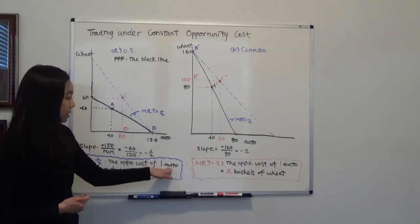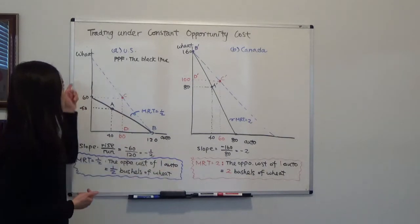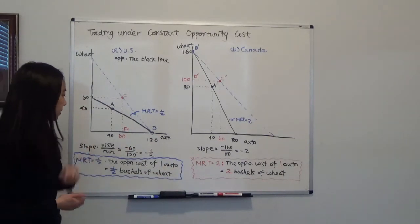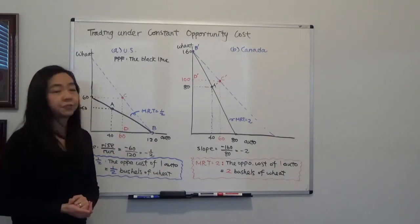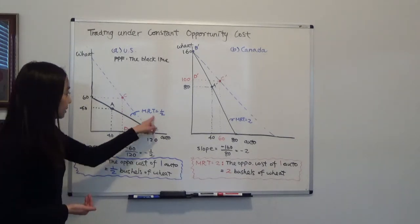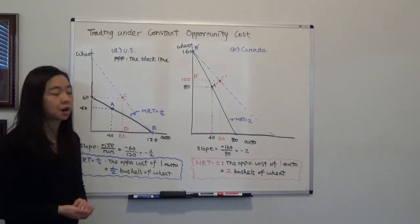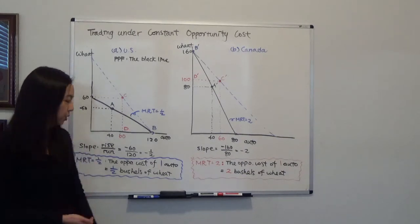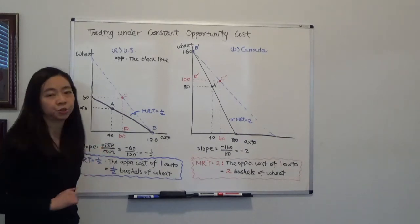So the opportunity cost of an automobile in terms of wheat. So here, the slope of the production possibility curve is negative a half, so that tells you the opportunity cost of one auto is a half bushel of wheat.